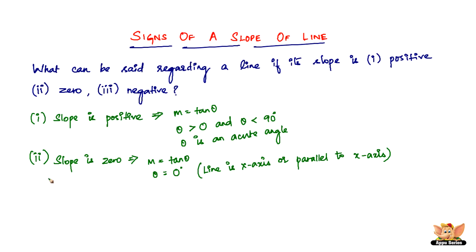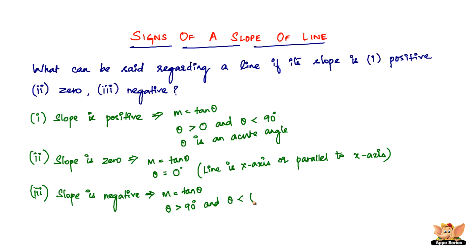Finally, when the slope is negative, we again have m equals tan theta. For m to be negative, theta should be greater than 90 degrees and less than 180 degrees. So if the slope of any given line is negative, the angle it makes with the positive direction of the x-axis lies between 90 degrees and 180 degrees, meaning theta is an obtuse angle.